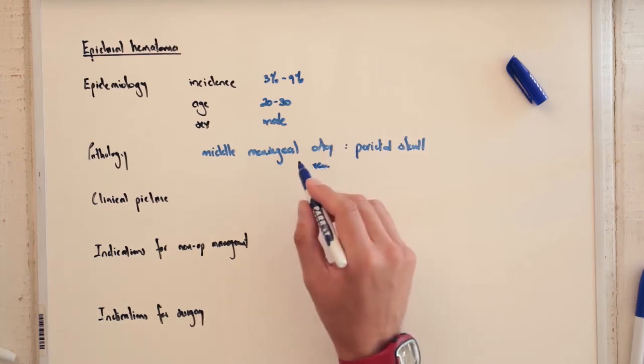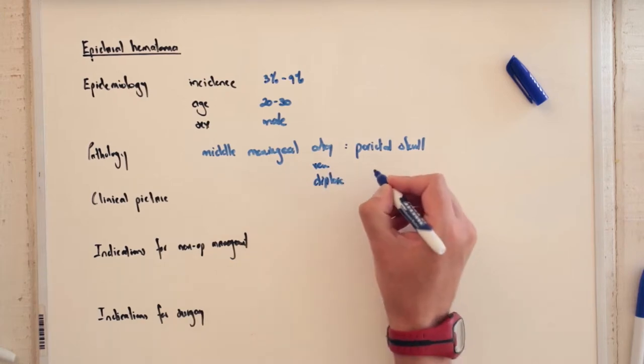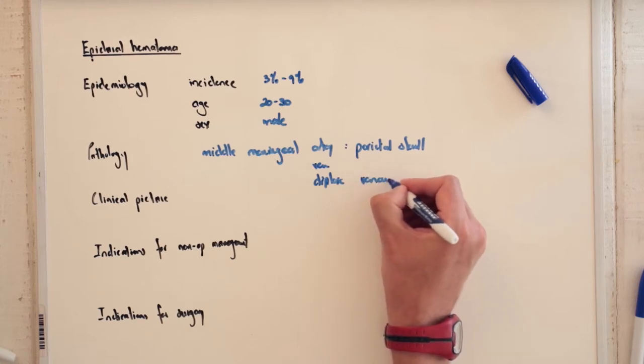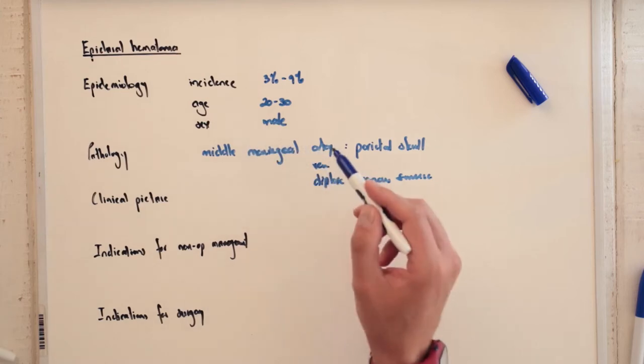But you can also get middle meningeal vein injuries, the diploic veins, and also the venous sinuses in that area that can lead to an extradural hematoma.